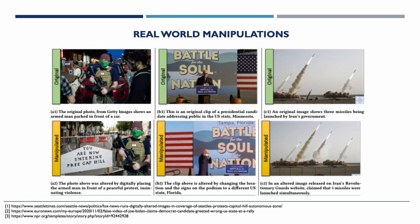Such video manipulations can alter political narratives, weaken the public's trust in a country's leadership, and increase hatred among various social groups. For instance, in the example on the left, the manipulated photo was altered by digitally placing an armed man in front of a peaceful protest, insinuating violence. In the example in the middle, a video circulating on social media during the US presidential elections was altered by changing the location and signs on the podium to mock a candidate's campaign. On the right is an example of a digital alteration to implicate the launch of four missiles when in truth only three were launched.